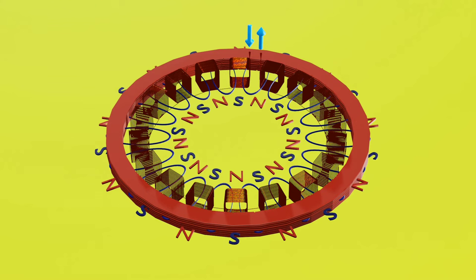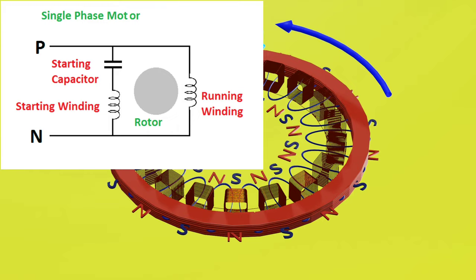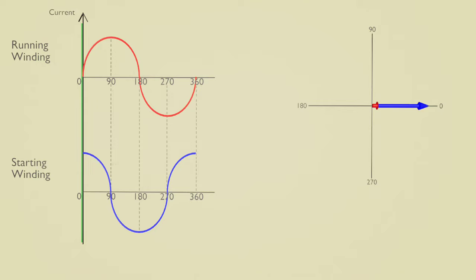So to overcome this problem, to give starting torque to our fan, we use second winding or starting winding and a capacitor. The capacitor is put in series with starting winding. This whole arrangement is in parallel with running winding. How does this arrangement work? Let's see.